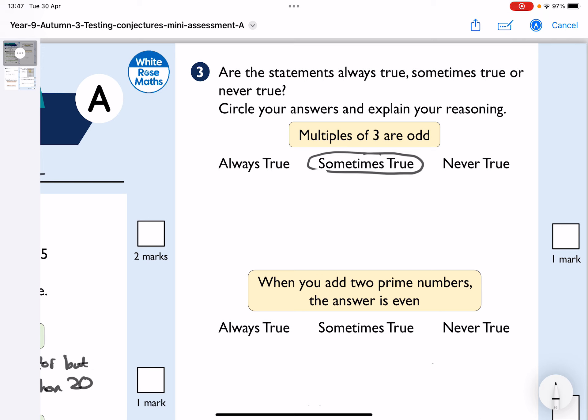Well, if we look at the multiples of three, we actually have three, six, nine, twelve, fifteen, eighteen. Multiples of three, three times table.